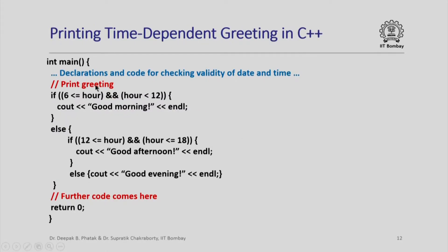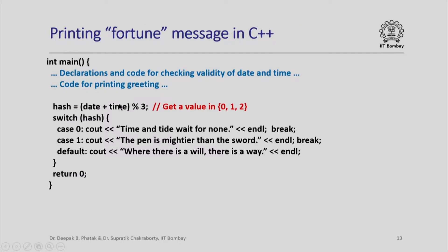After that we print a time-dependent greeting: if the hour is between 6 and 12 we print good morning; if the hour is between 12 and 18 (noon to 6 pm) we print good afternoon; otherwise we print good evening. Finally, to print the fortune message — as seen in an earlier lecture — we compute a hash value between 0, 1, and 2 from the given date and time values, then use a switch-case statement to print one of the three predetermined fortune messages.